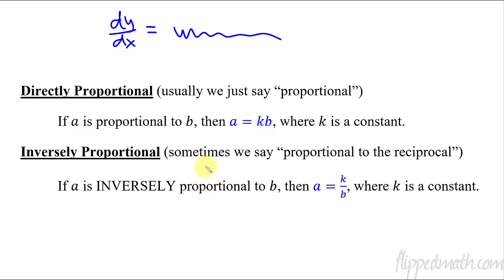Inversely proportional, sometimes we'll say instead that it's proportional to the reciprocal. So if you see that phrase, it means the same thing as inversely proportional. And a is inversely proportional to b when a equals k over b. Or you might see it as a equals k times 1 over b. K again is just some constant. So it's k divided by b when it's inversely, it's k times b when it's directly. Now that we've reviewed that, let's use it.